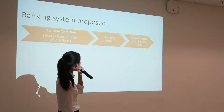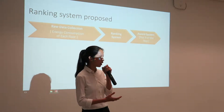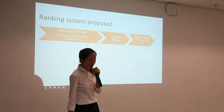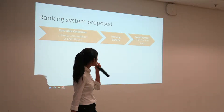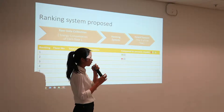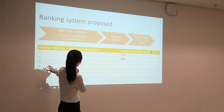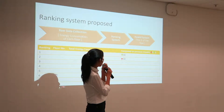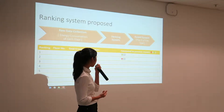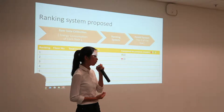Together with our monitoring system, we also propose a ranking system. All the raw data collected on each floor's energy consumption will be gathered, and all floors will be ranked according to their monthly energy consumption. Each month, floors can be ranked and their consumption compared to the previous month, so residents can know their percentage change. By doing this kind of ranking, people can be more aware of their energy consumption.